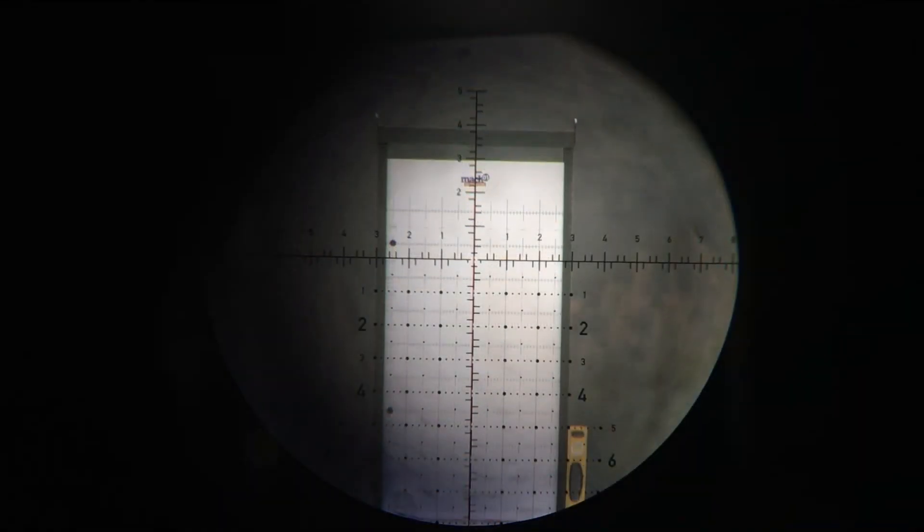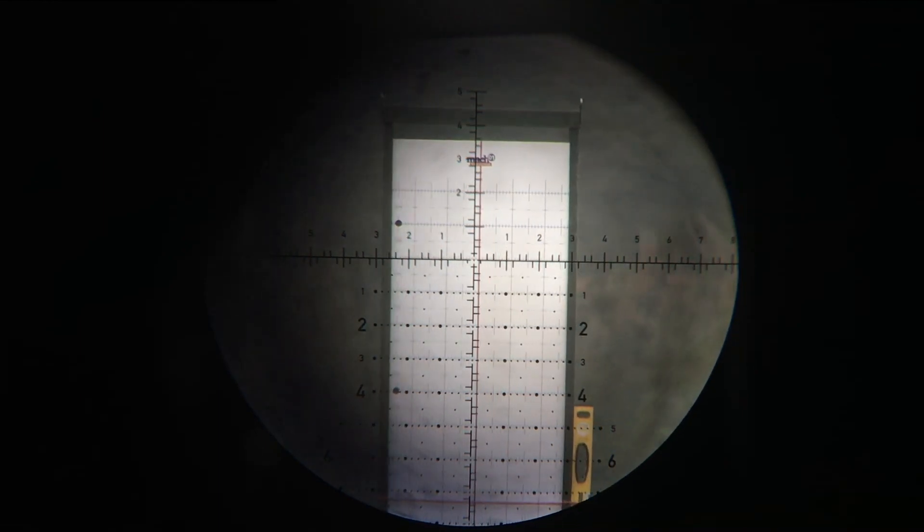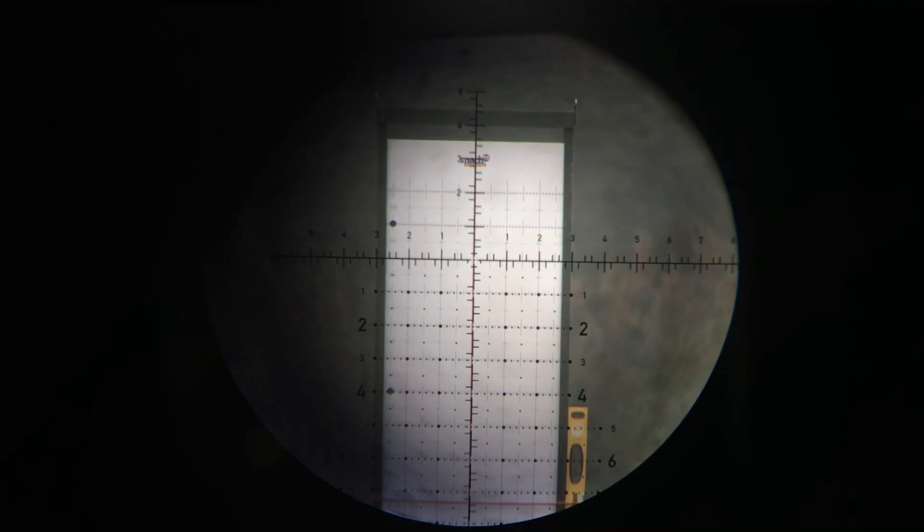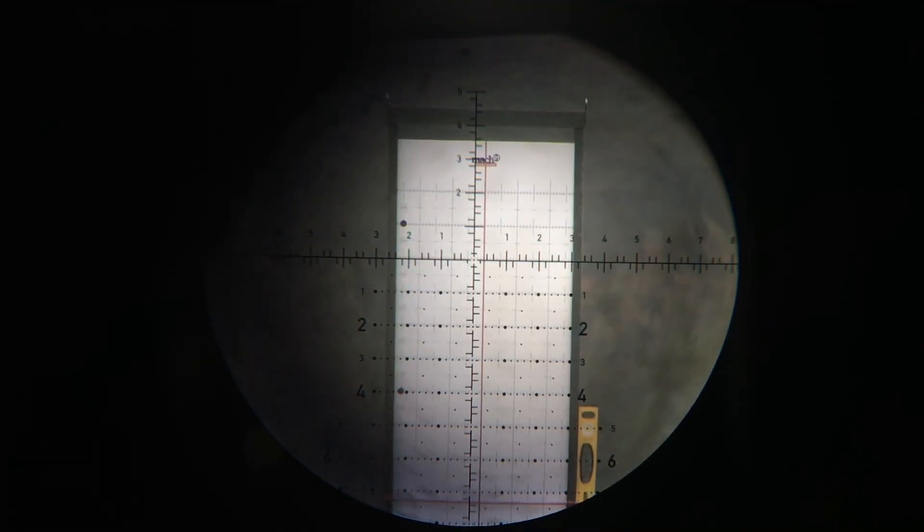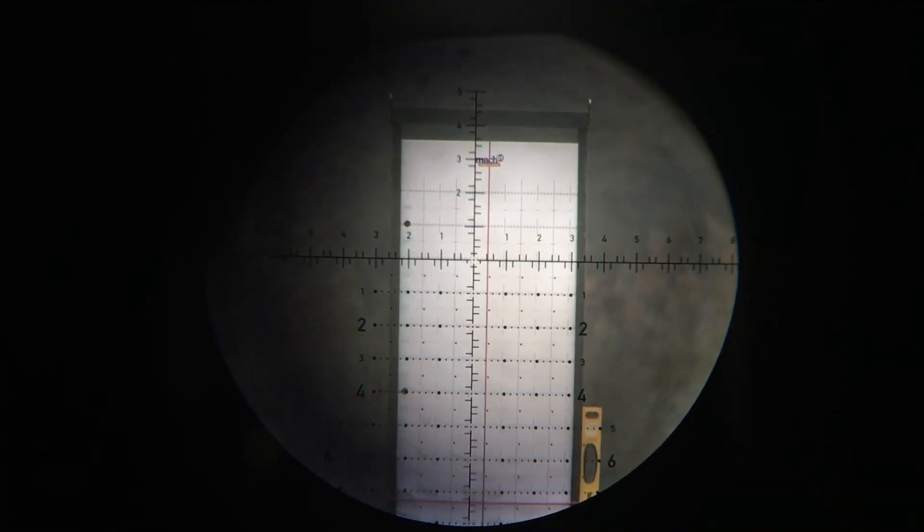And now how did this Night Force Attacker 5 to 25 mil XT scope perform. For the first part of the test where I checked for cant you can see that it is perfectly vertical over at least 10 mils from 2 mils over the center of the reticle and 8 mils below the center of the reticle so luckily there is no cant in this scope.